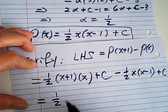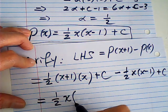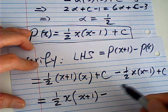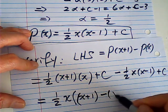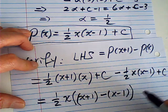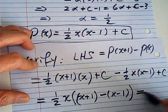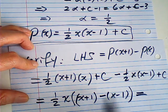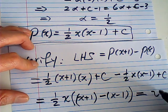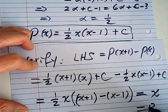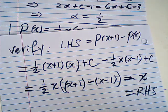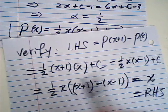So 1/2 · x is common, (x+1) minus (x-1). That is equal to x, cancel out 2x, this is equal to x. That is equal to the right-hand side. So bravo, that is verified.